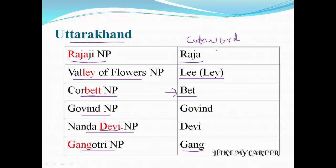So the code words are: Raja, Lee, Bet, Govind, Devi, Gang. This is very important.